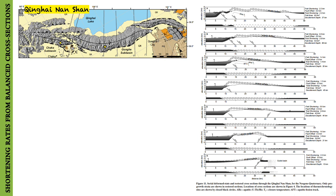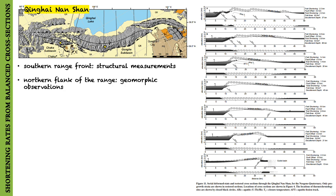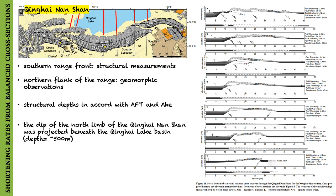Several assumptions and simplifications were made to construct these structural models. For the Qinghai-Nanshan sections, they used structural measurements along the southern range front and geomorphic observations from the northern flank to constrain the deformed-state fold geometry, ensuring that inferred structural depths are in accord with the apatite fission track and apatite helium data. They assumed that the fold limbs projected and intersected approximately above the topographic divide of the range and that these limbs were not offset by faulting.